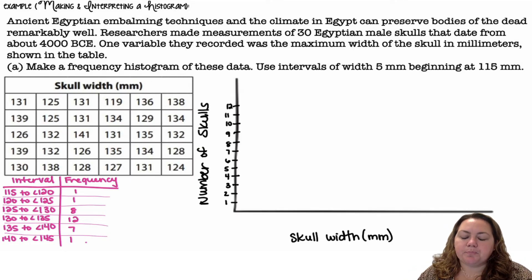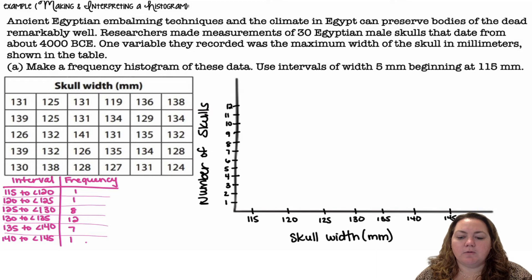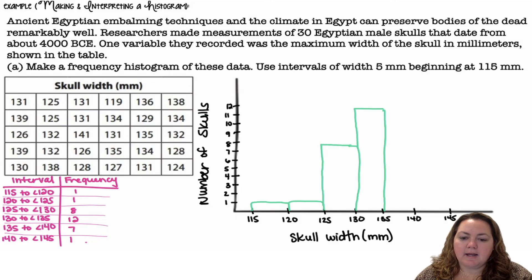I'm going to set up my histogram, my axes. Number of skulls, I'm going to count by ones. And then skull width in millimeters, I'm going to count by fives starting at 115, so 115 up to 145. My first bin, I had only one. My next one, I had only one. Then I had eight. Then I had 12. Then I had seven. And then I had one. You do want to try to keep the size of the bars as close to the same as possible.